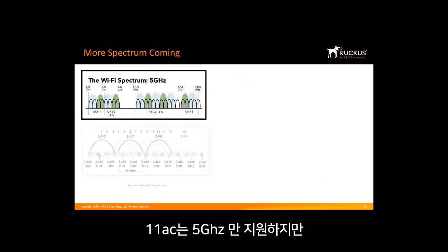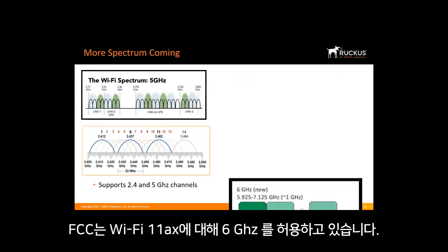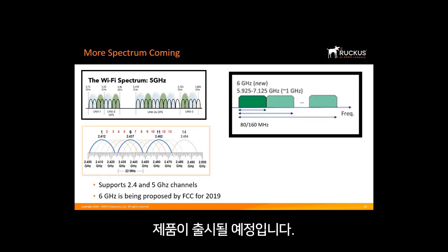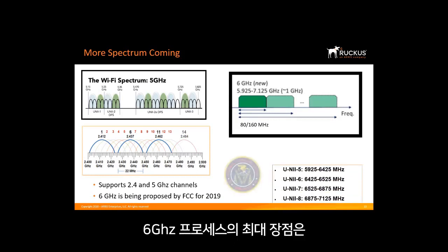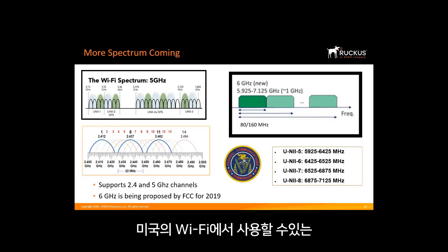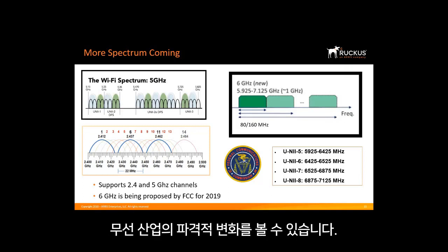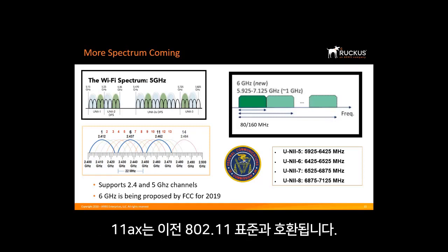11ac only supported 5 GHz. 11ax will support both 2.4 and 5 GHz, and the FCC is opening the 6 GHz spectrum for Wi-Fi. 11ax will utilize the 6 GHz unlicensed frequency when approved by the FCC, which was expected in 2019. The 2.4 GHz band is especially important because of the rapidly rising number of IoT devices. The 6 GHz process could make more than 1 GHz of new unlicensed spectrum available — the amount of Wi-Fi bandwidth in the U.S. has remained unchanged for over a decade. With 6 GHz, 160 MHz channels will become a reality, and 11ax is compatible with earlier 802.11 standards.